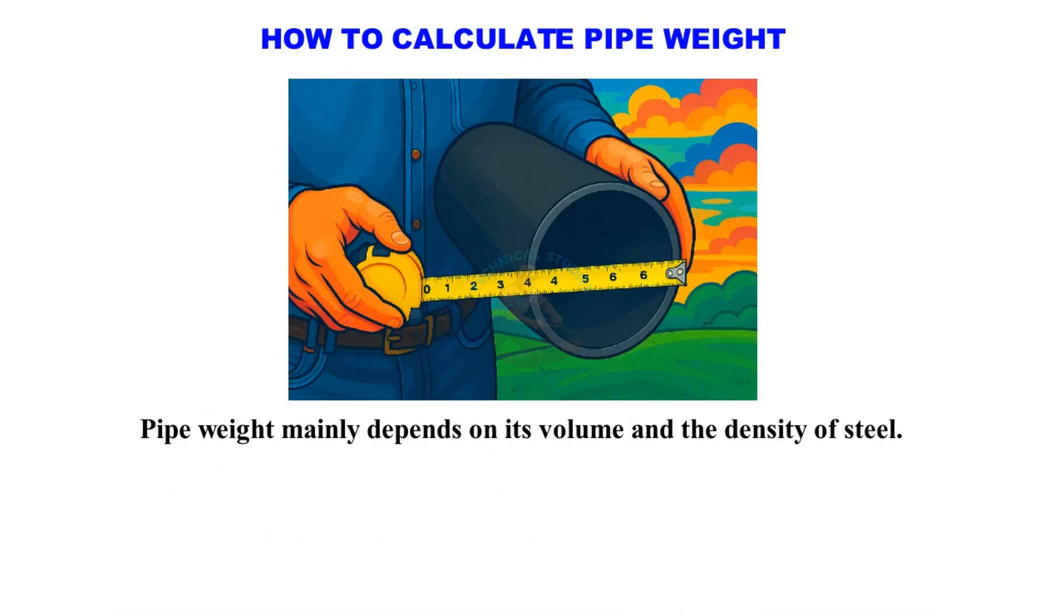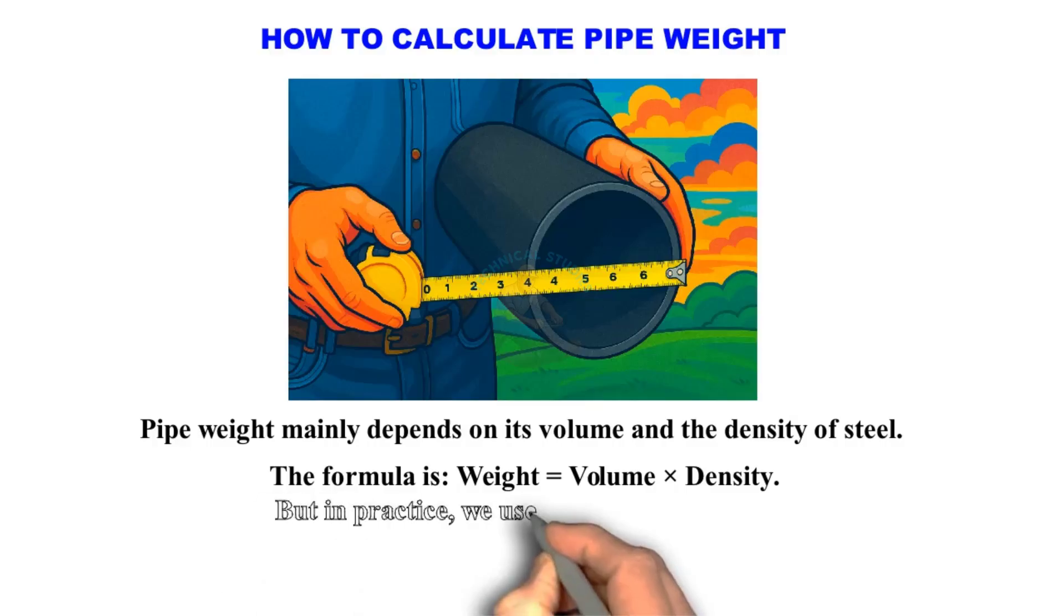Pipe weight mainly depends on its volume and the density of steel. The formula is weight equals volume times density. But in practice we use a shortcut formula.